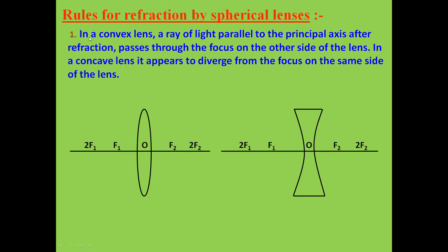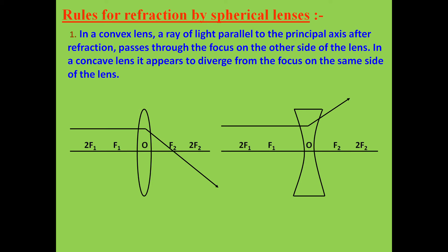First rule: In a convex lens, a ray of light parallel to the principal axis, after refraction, passes through the focus on the other side of the lens. Whereas in a concave lens, it appears to diverge from the focus on the same side. Look here — this ray parallel to the principal axis passes through focus F2 in convex lens, and in concave lens it diverges and appears to come from focus F1.